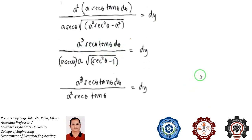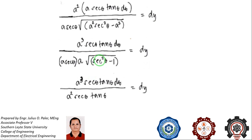Multiplying a and a in the denominator gives a squared. We copy secant theta, and extract the square root of secant squared theta minus one, which by identity equals tangent squared theta, so the square root is tangent theta. We copy the numerator, equal to dy.